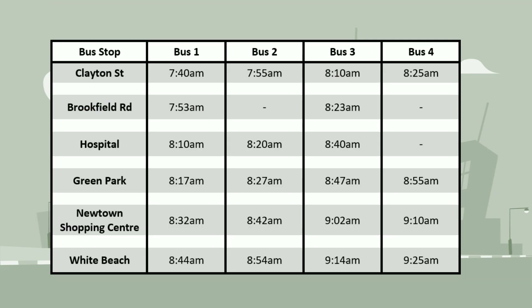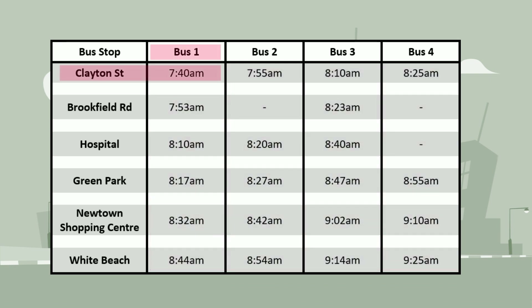Back to our timetable. A time is listed for each of the stops and buses. For example, we can see that bus 1 leaves its first stop, Clayton Street, at 7.40 a.m.